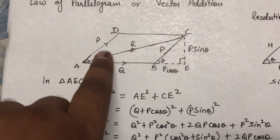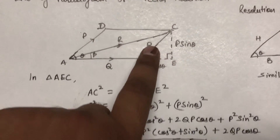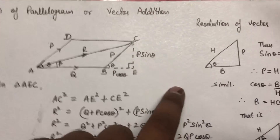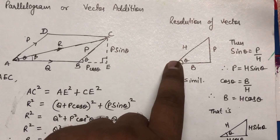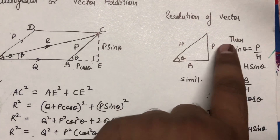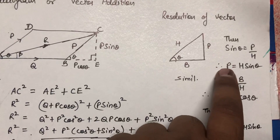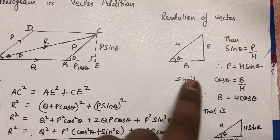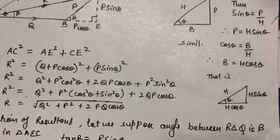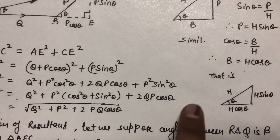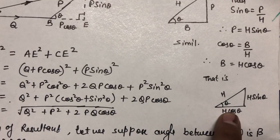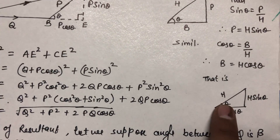Now we construct: if this side is P, then the opposite side is also P since the sides are parallel and equal. We resolve this value of P into two components: P cos θ and P sin θ. The method of resolution is shown in the figure — if this is the hypotenuse H, perpendicular, and base, then sin θ equals perpendicular upon hypotenuse, giving P equal to H sin θ. Similarly, cos θ equals base upon hypotenuse, giving B equal to H cos θ. So if hypotenuse is H and the angle is θ, then H cos θ is the component near to θ and H sin θ is the other component.